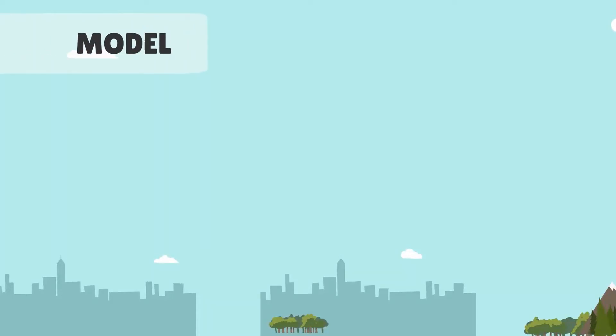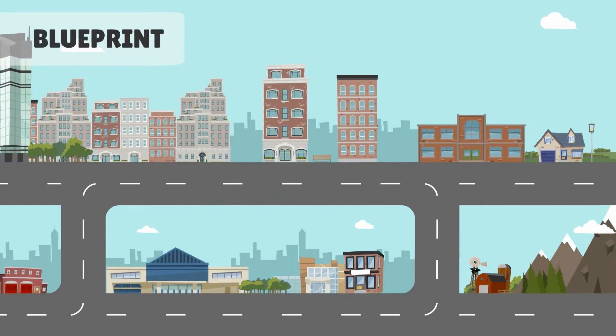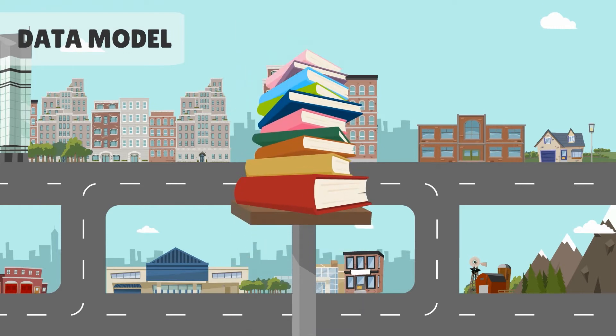A model represents a complex landscape. A map is a model of a geographic landscape. A blueprint is a model of an architectural landscape. A data model is a model of an information landscape.